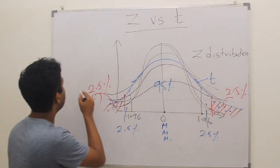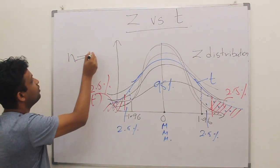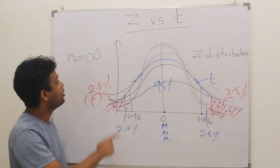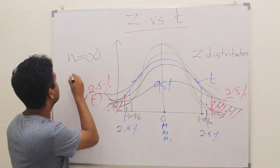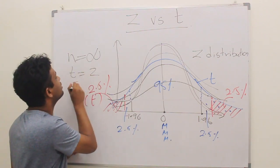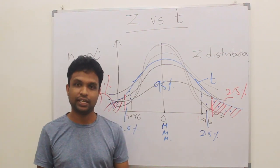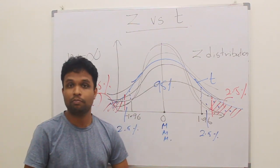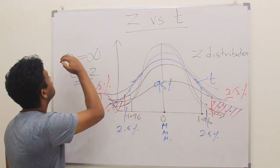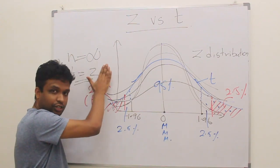When your N equals infinity, when N goes to infinity, the T-distribution equals the Z-distribution. Or simply, the T-values will be the same as the Z-values. But we need to have the sample size of infinity.